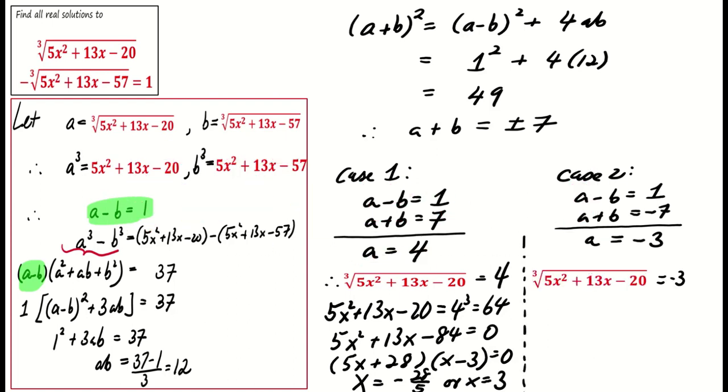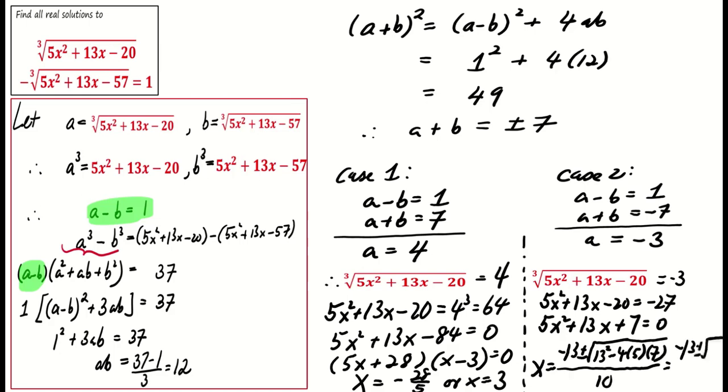Similarly, for a = -3, we also obtain a quadratic equation in x as shown. Solving this equation gives x = (-13 ± √29)/10.